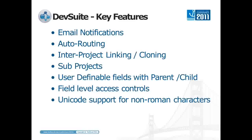Another key feature is DevTrack's auto-routing feature, which is used by one of our studios in particular. They love it because it essentially allows the system to take some of the hassle of assigning bugs to specific users — we can use criteria within the bug to auto-route a bug to a specific developer who's going to address it using the auto-routing function. It's really handy.